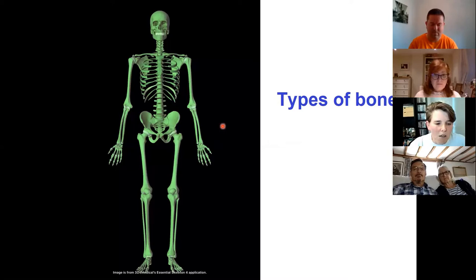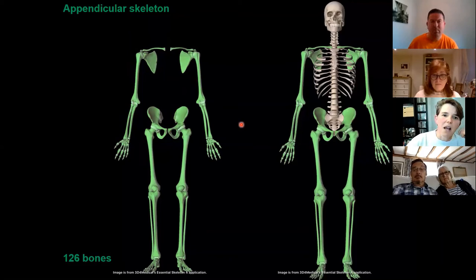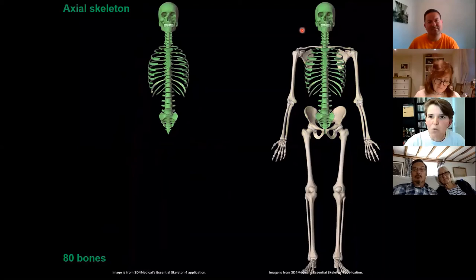We can classify bones. At the whole-skeleton level we have two types: the appendicular skeleton — 126 bones make up the appendicular skeleton, which are the bones at the apex of the body — and the axial skeleton, which runs down the axis of your body and is made up of about 80 bones. Osteologists are really good at naming things.